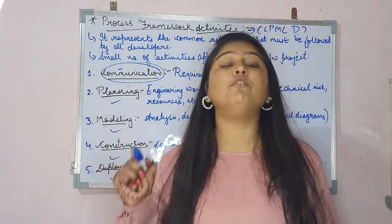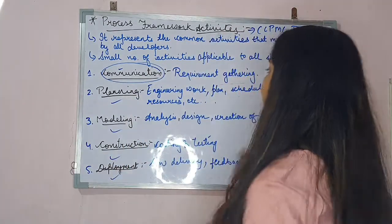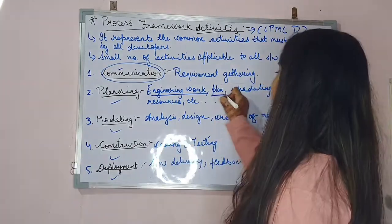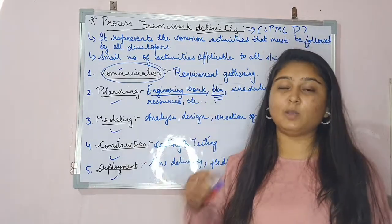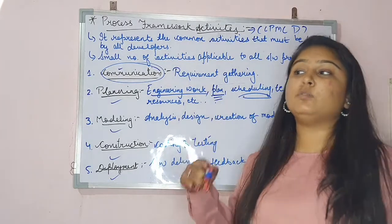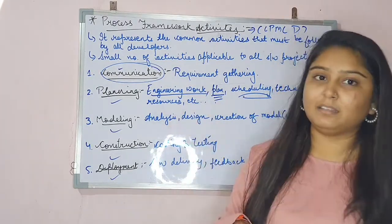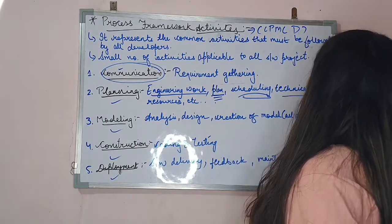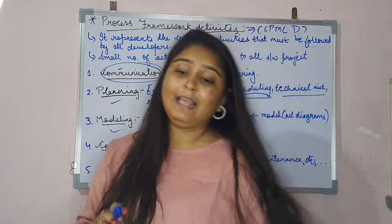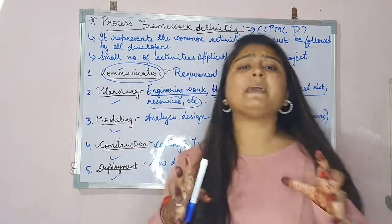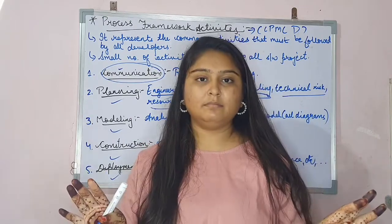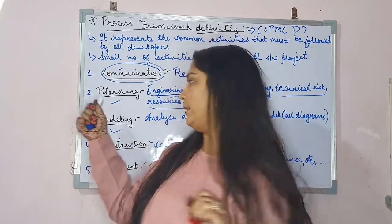Planning involves deciding how to make the software. It includes engineering work — developing and all — then a plan for how that engineering work will be done, scheduling of modules, when to link the modules, technical risks, resources, and so on. Everything related to the typical planning of what is going to be done is covered during this activity.